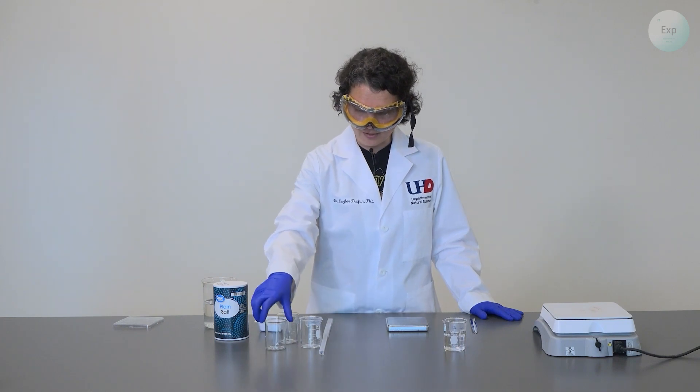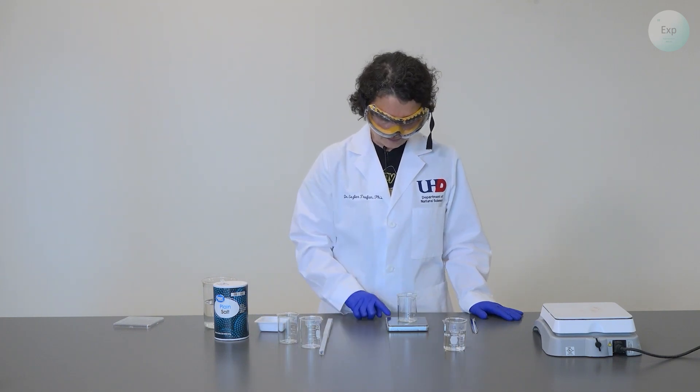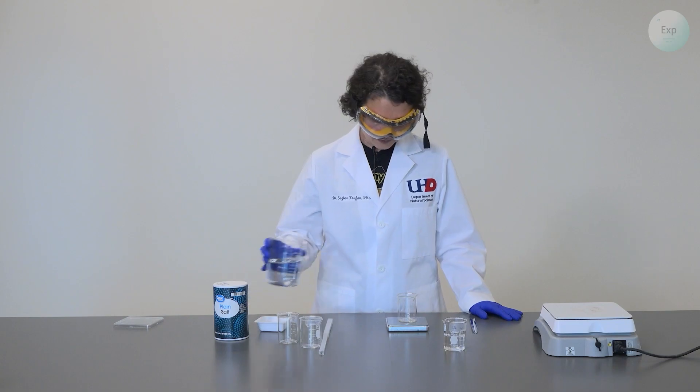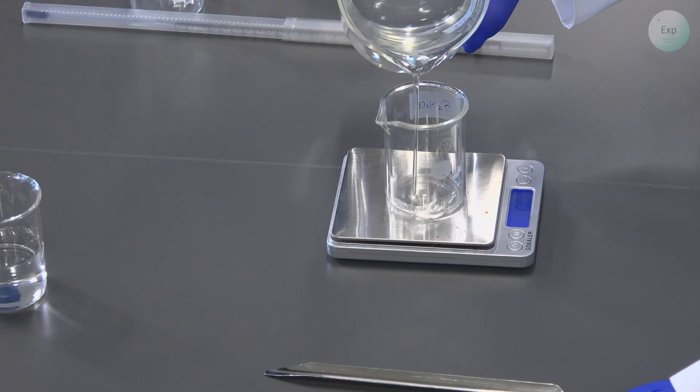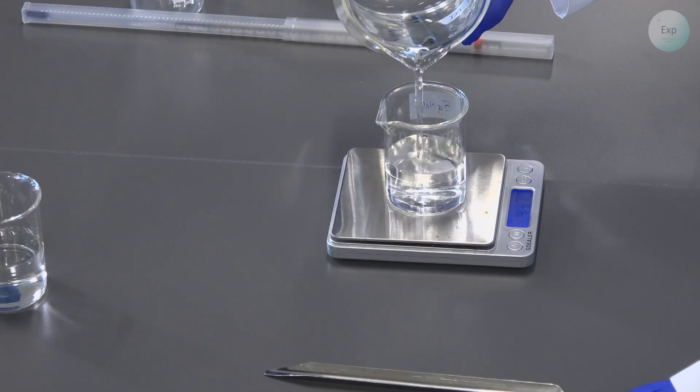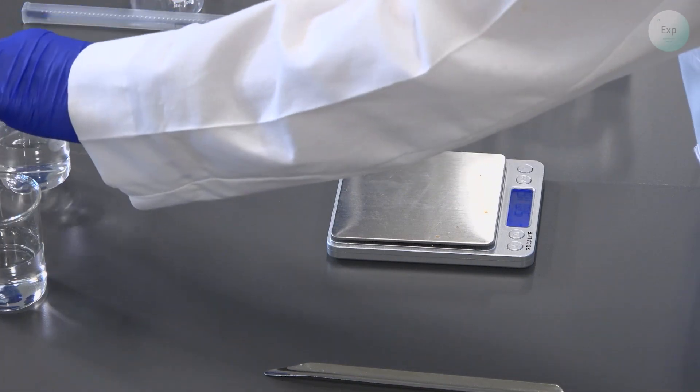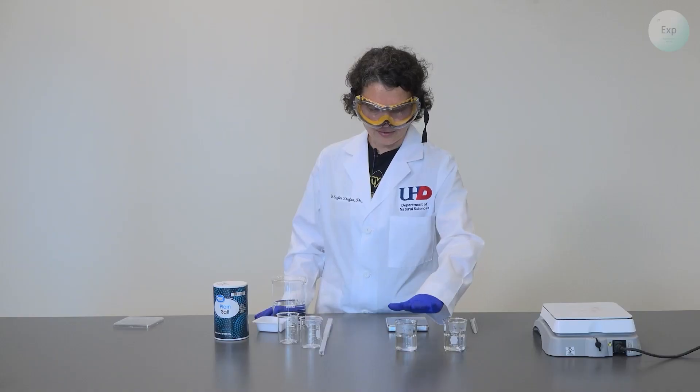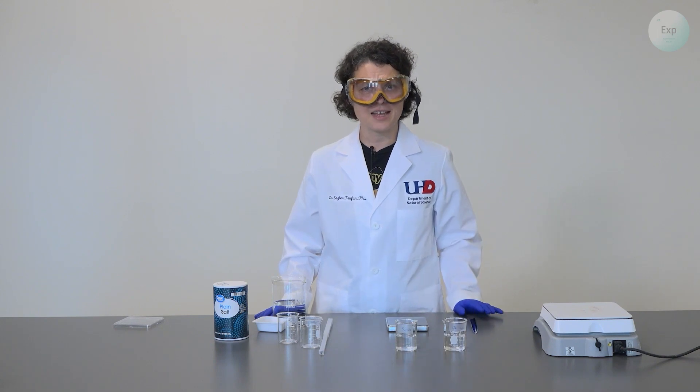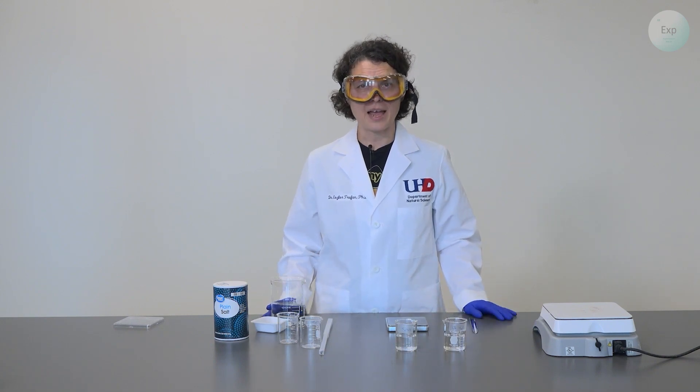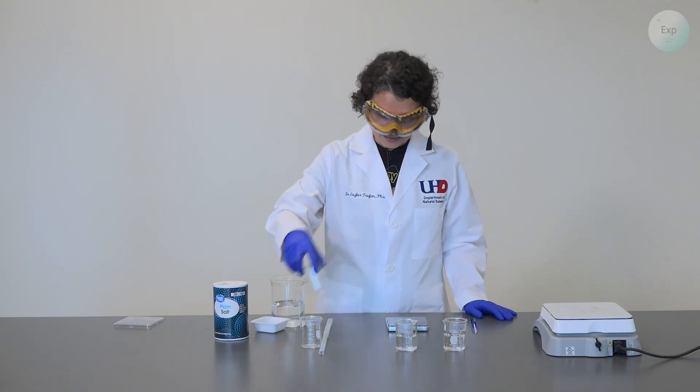Next, I'm going to move on to my second beaker, tare it, and measure out another 50 grams of water. I have 49.85 grams of water. I labeled this beaker with a label that says 5 grams of sodium chloride because that is the amount of sodium chloride I will add to it in just a little bit.